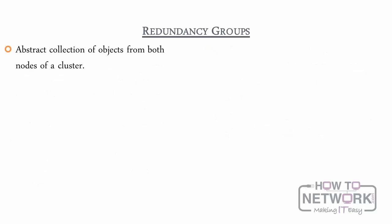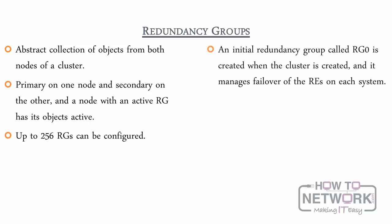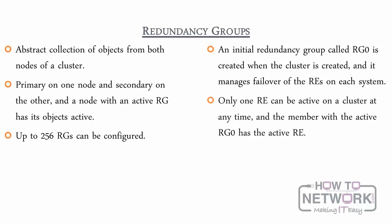A redundancy group is an abstract collection of objects from both nodes of a cluster. It is primary on one node and secondary on the other, and a node with an active RG has its objects active. Up to 256 RGs can be configured. They are independent entities, and one failing over does not affect another. The initial redundancy group, called RG0, is created when the cluster is created and it manages failover of the routing engines on each system. Only one routing engine can be active on a cluster at any time, and the member with the active RG0 has the active routing engine.